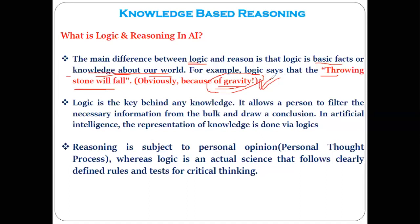Now come to the another point that is reasoning. What do you mean by reasoning? Reasoning is the word taken from the reason, or making some conclusion. The reason is nothing but subject to the personal opinion or personal thought process. So can the personal thought process be the same for different persons, or can it be different? It can be different for different persons — that is the personal thought process, the personal opinion. But logic is nothing but the actual science — it is the actual fact or actual science that clearly follows defined rules.